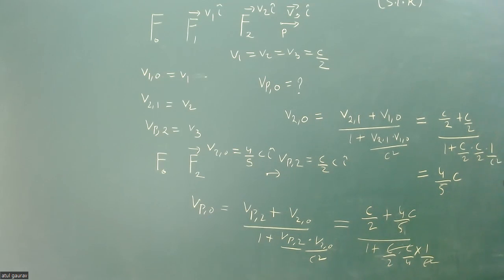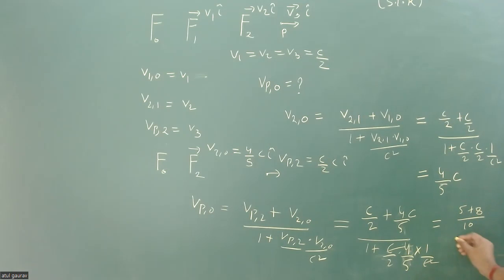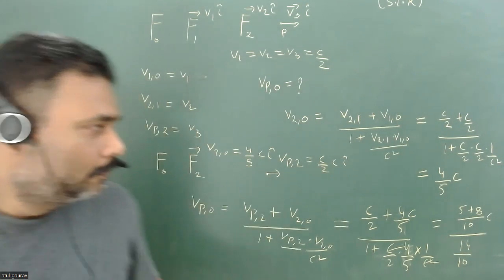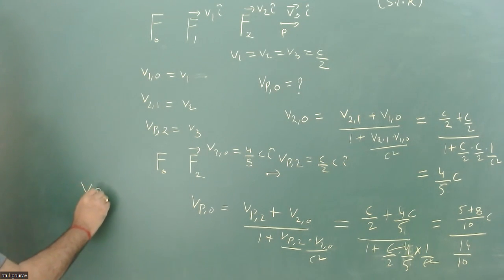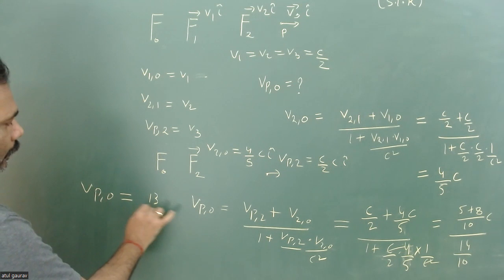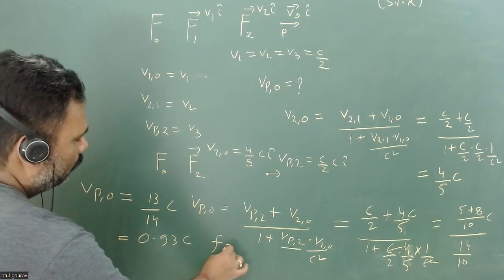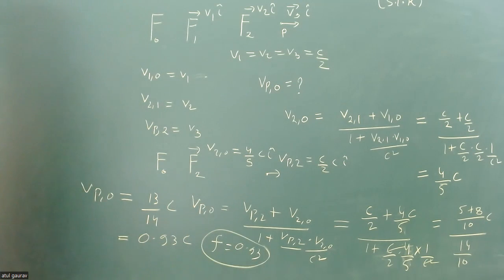So the velocity of F2 w.r.t. F0 is 4c/5 (not c/2 — correction noted). Calculating the numerator: c/2 + 4c/5 = 5c/10 + 8c/10 = 13c/10. The denominator: 1 + (c/2)(4c/5)/c² = 1 + 4/10 = 14/10. So the velocity of the particle with respect to F0 is 13c/14 ≈ 0.93c. The answer is 0.93.